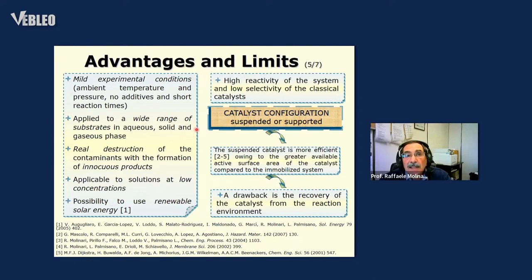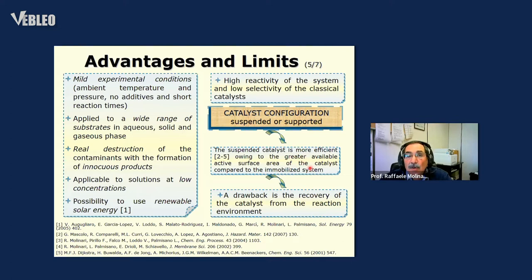Photocatalysis can be used in two different configurations: the suspended configuration or the supported configuration. The suspended configuration is more efficient because of the higher active surface area of the photocatalyst compared to the immobilized system. But as a drawback, there is the problem of recovering the powder photocatalyst from the system. So in the classical photoreactor, there is the problem of how to separate the photocatalyst.